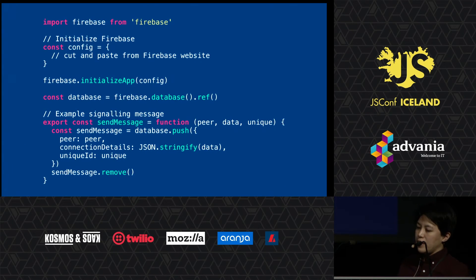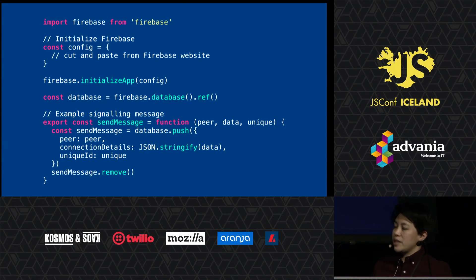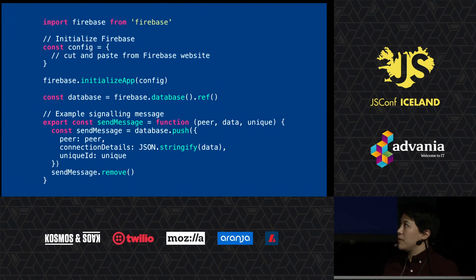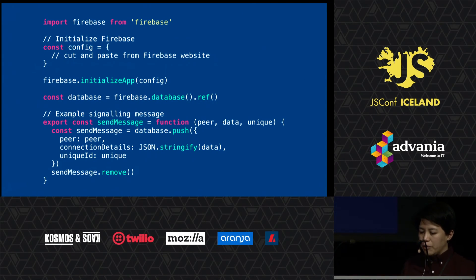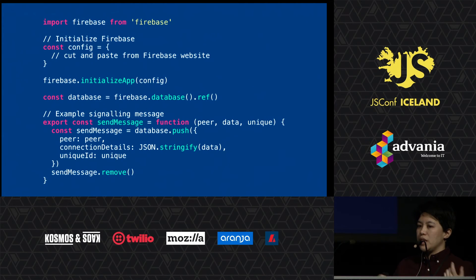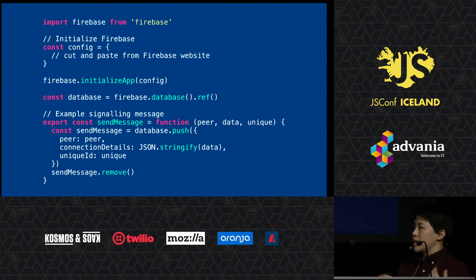Here's some example Firebase code. You import Firebase, paste the config you get from the Firebase website when you set up a new database, initialize your app with that configuration, and get a reference to your database. When you want to send a message, you just push it to the database. If you do it with a unique ID, the other peer knows the message is from you based on the ID, accepts it, and uses it when signaling and trying to find another peer.